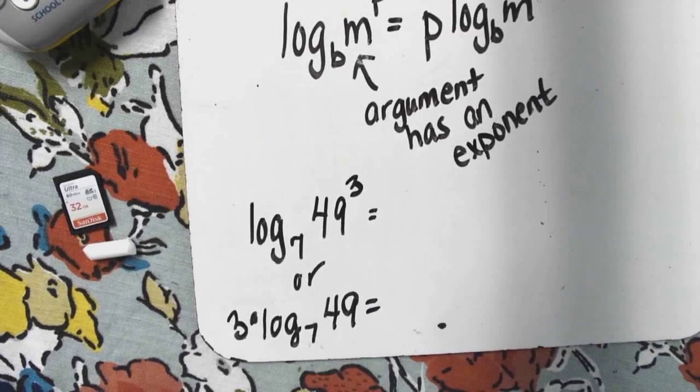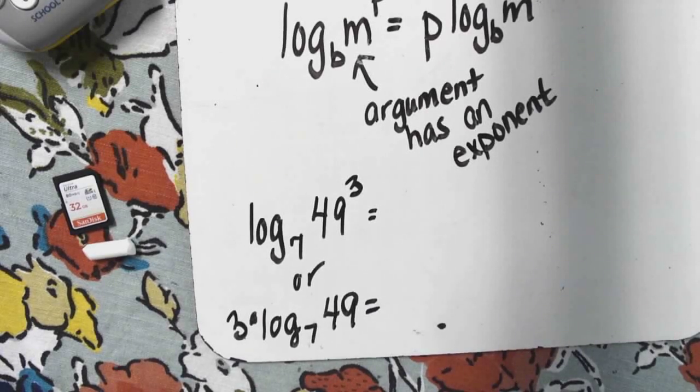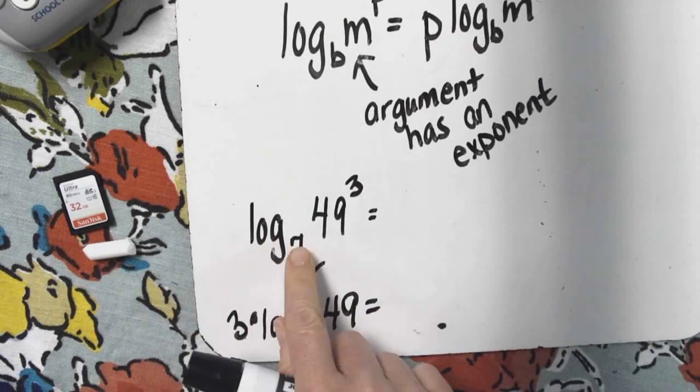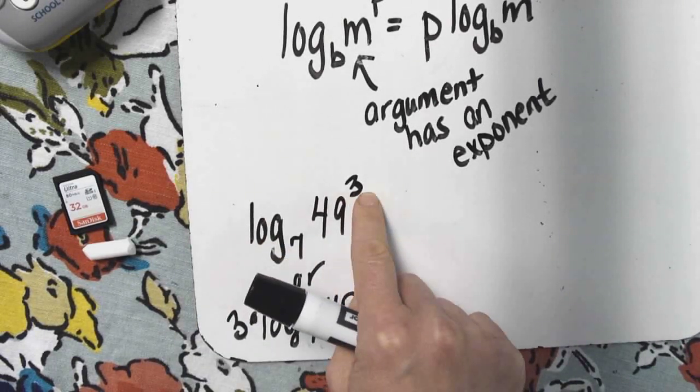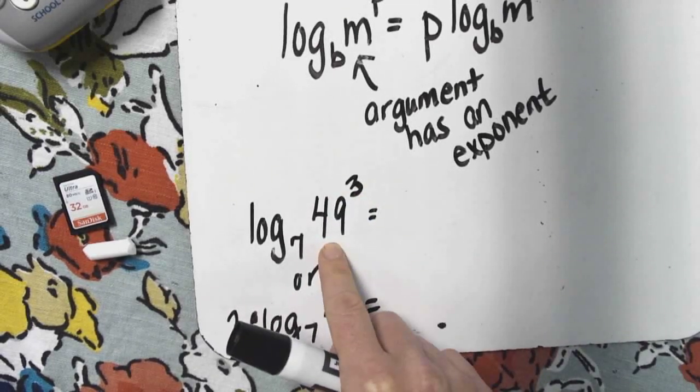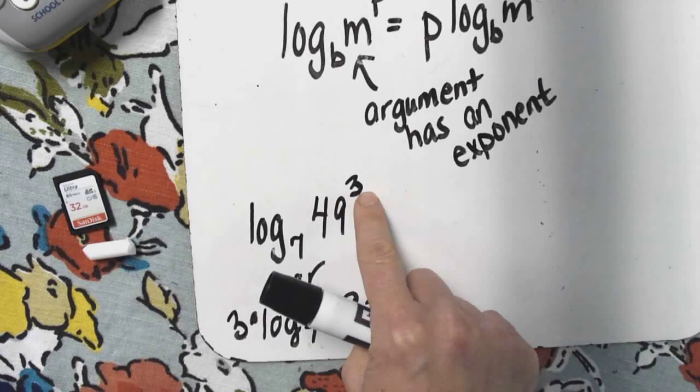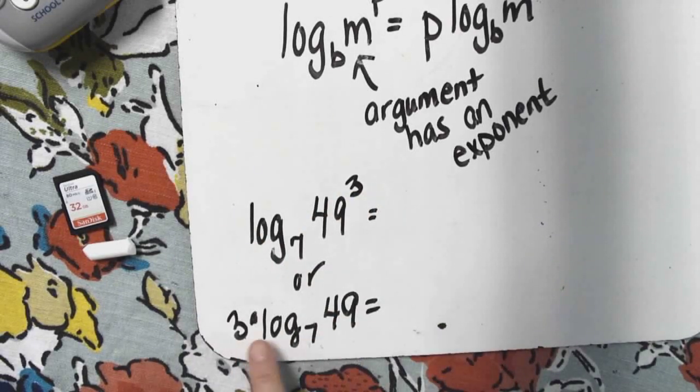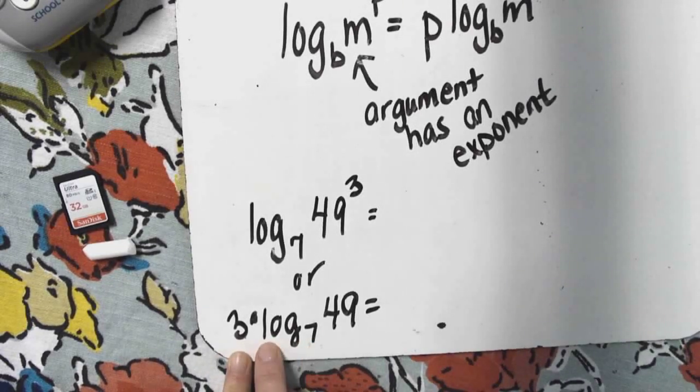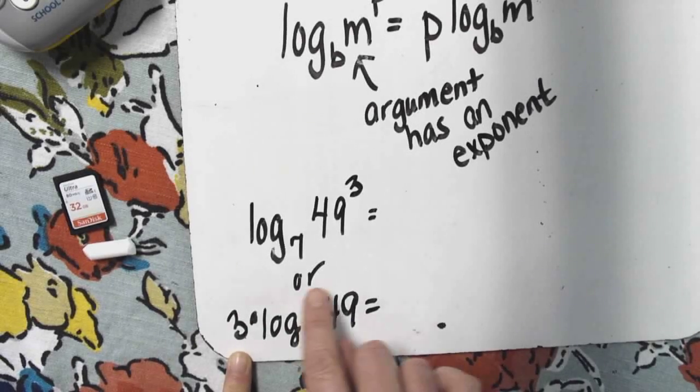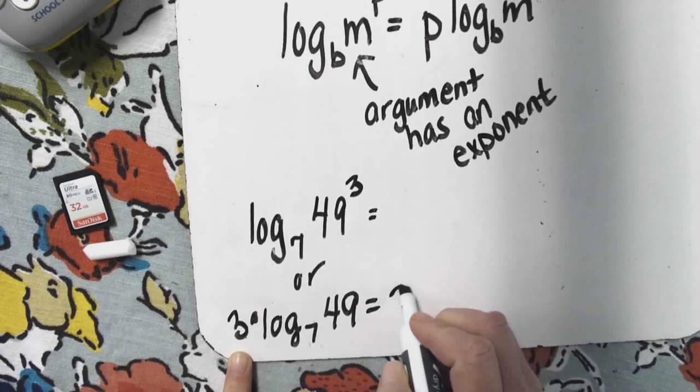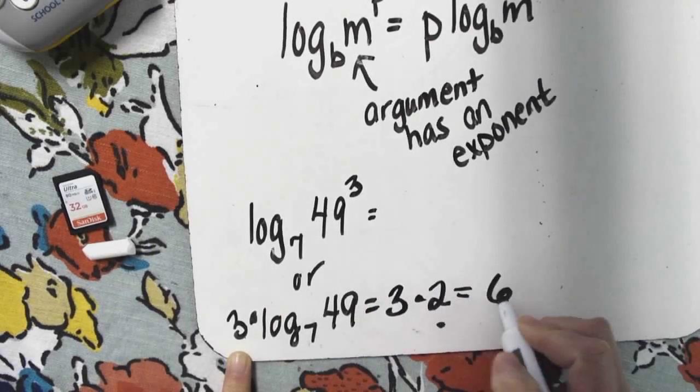So I have an example here. If I had my choice of finding log base 7 of 49 raised to the third power, I don't know what 49 raised to the third power is. I would much rather take the exponent and fly it to the front like I have right here. Because log base 7 of 49, that right there is 2 because it takes two 7's multiplied together to give you 49. So it's simply 3 times 2 or 6.